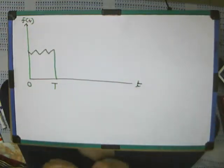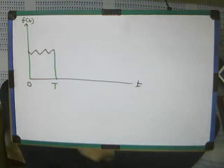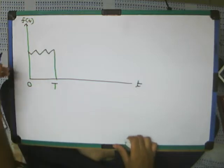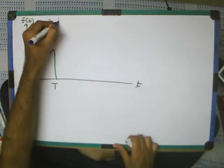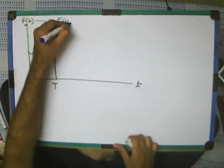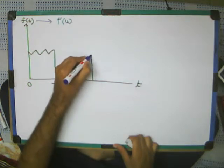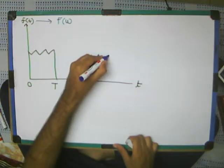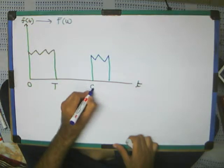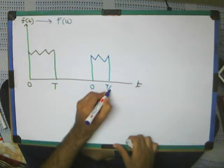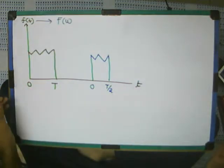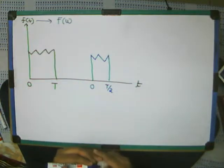Then, if I know this signal, just tell me, if I know that this signal leads to capital F of omega, then this is 0 to T by 2. Can I simply find the Fourier transform directly from this? Definitely.